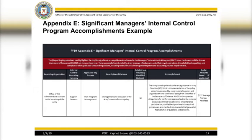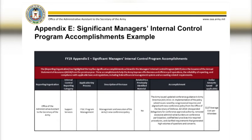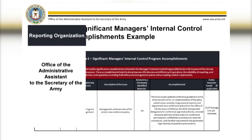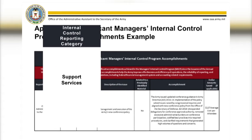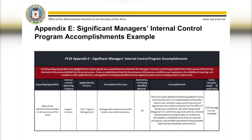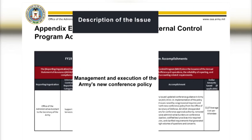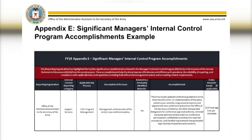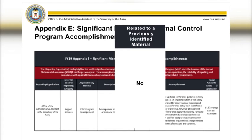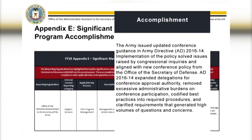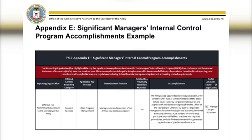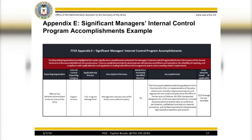On this slide, we provide an example accomplishment in the Appendix E format. Appendix E has seven columns that your organization must complete: Reporting Organization — your accessible unit; Internal Control Reporting Category — listed in the drop-down with definitions provided; Applicable Key Process — also choose a selection from the drop-down; Description of Issue — the title of your issue; Related to a previously identified material weakness — yes or no; Accomplishment; and Dollars saved. When submitting your Appendix E feeder statement, please ensure that your organization uses this format. Please watch the step-by-step instructions provided by ASA FM&C.